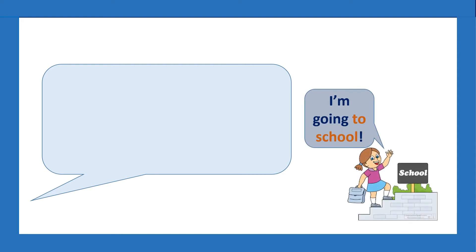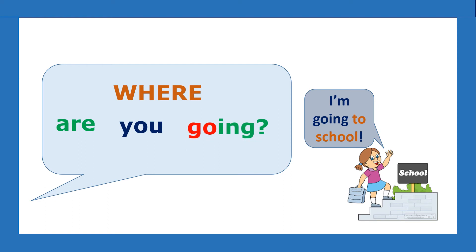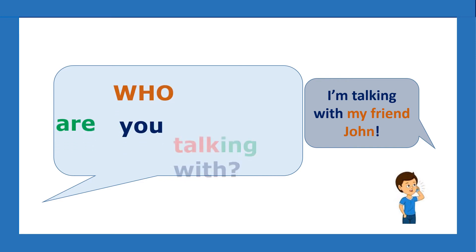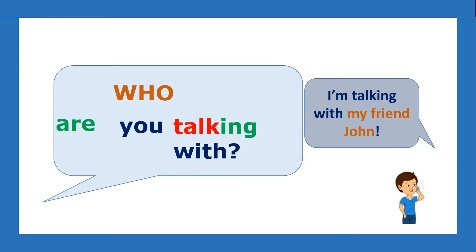I am going to school. What's the question? Where are you going? I'm going to school. School is a place, so the question word for place is 'where.' I'm talking with my friend John. What's the question? Who are you talking with? I'm talking with my friend John. John is a person, so the question word is 'who.'